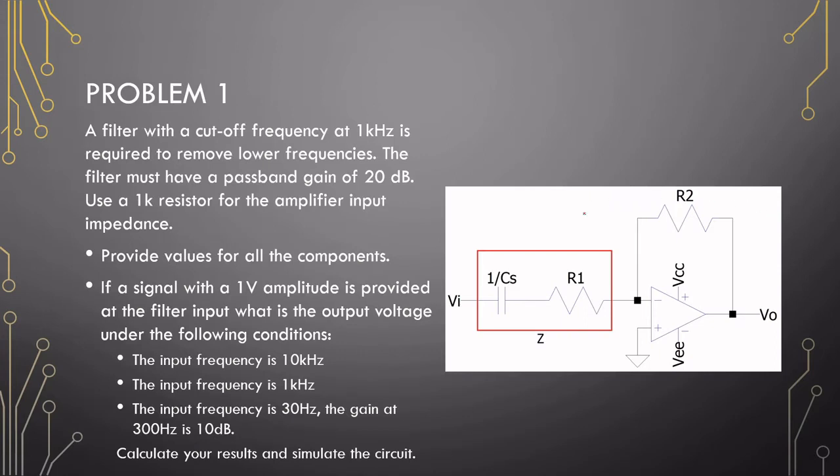The first problem that I want you to attempt is to design a filter with a cutoff frequency at 1 kHz. It's required to remove lower frequencies, a high-pass filter. The filter must have a passband gain of 20 dB. Use a 1 kΩ resistor for the amplifier input impedance.